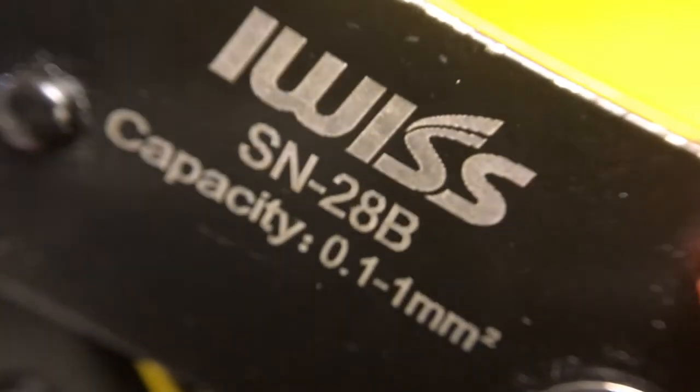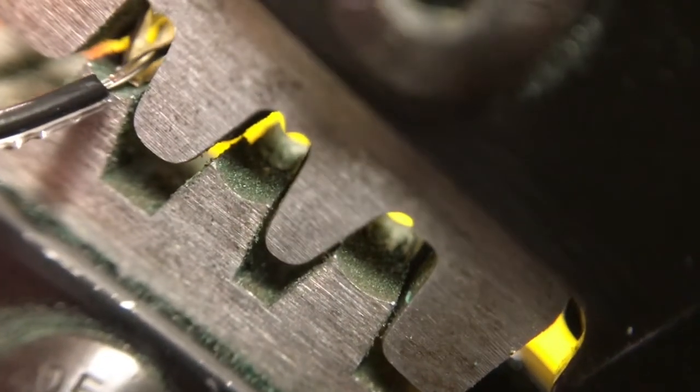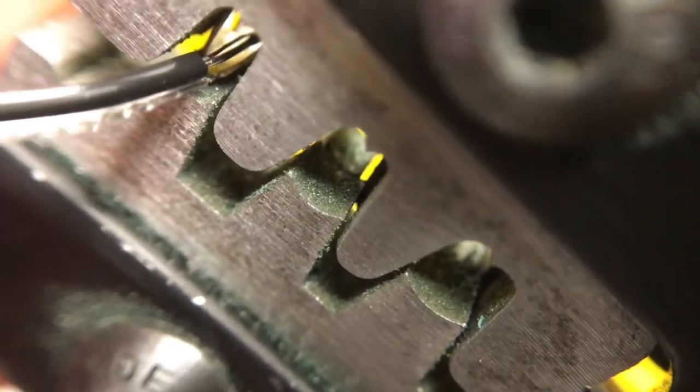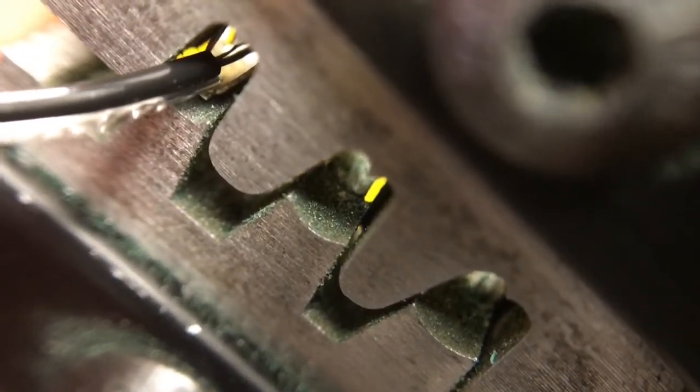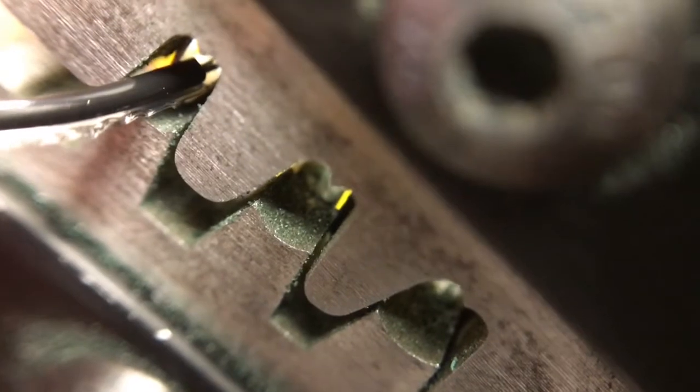Then you're going to insert—I don't think I can do this with the camera really in view but I'll try. I'm gonna insert my wire and I'm going to put my insulation right up to the tab and then feed it in a little bit further.